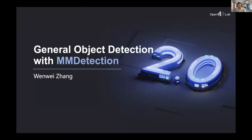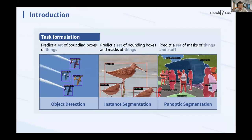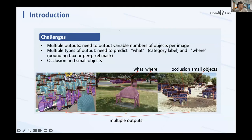What is object detection? In its general meaning, it includes three tasks supported in MM Detection. The first is object detection, which predicts a set of bounding boxes of things. In a more general meaning, it also includes instance segmentation, which requires further segmenting things. Sometimes we also include panoptic segmentation, which needs to predict marks for both things and stuff.